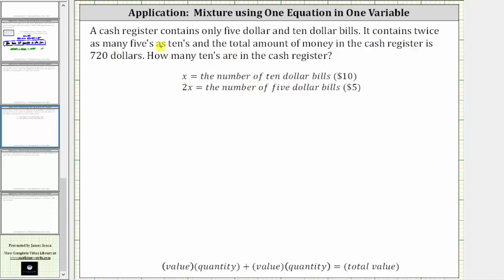Because there are twice as many fives as tens, if x is the number of $10 bills, then two times x or 2x represents the number of $5 bills. Notice how using these expressions, however many $10 bills there are, there will always be twice as many $5 bills.